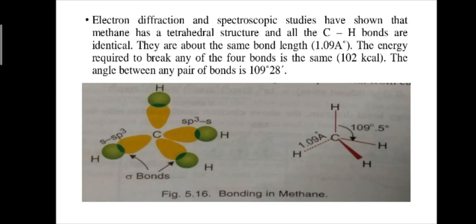Since the four sp3 orbitals are oriented such that their axes are directed towards the corners of a regular tetrahedron with the carbon located at the center, the bond angles in methane are the same as the angles between the axes of sp3 orbitals, i.e., 109 degrees 28 minutes.